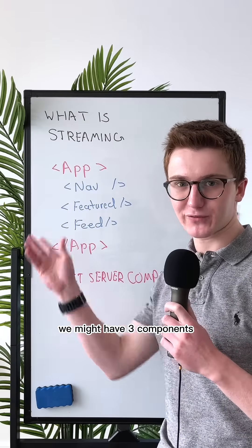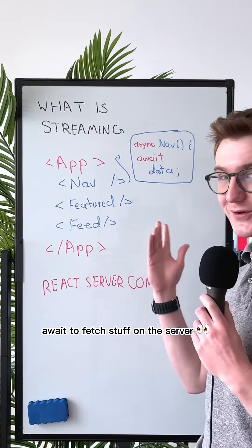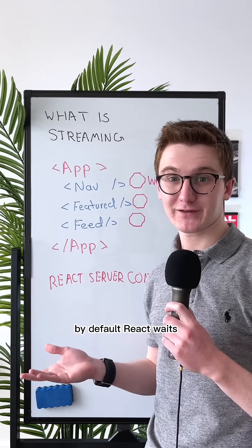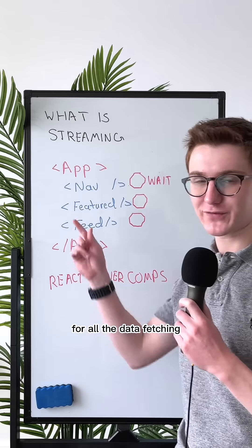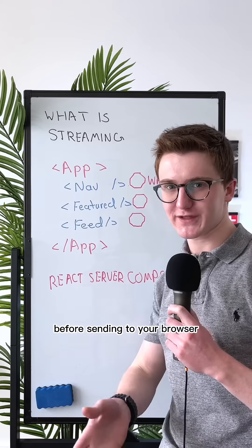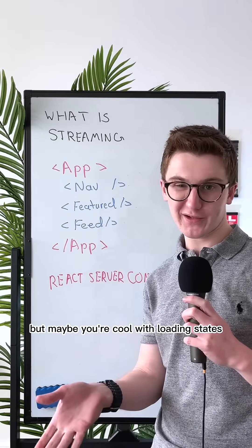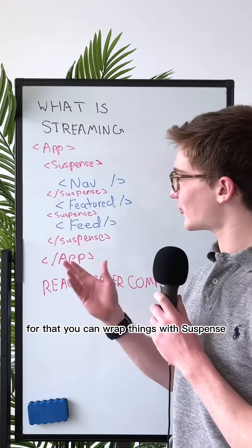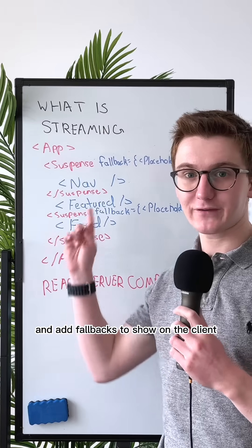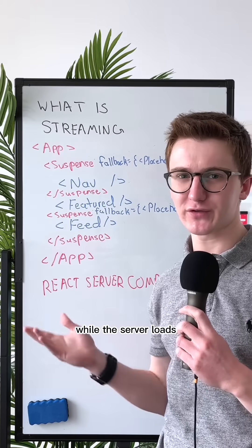Modeling our Twitch app, we might have three components, and each can use async/await to fetch stuff on the server. By default, React waits for all the data fetching to be done before sending to your browser. But maybe you're cool with loading states — for that, you can wrap things with Suspense and add fallbacks to show on the client while the server loads.